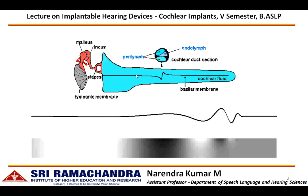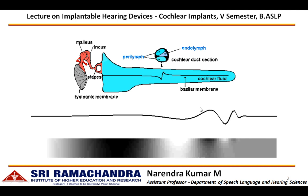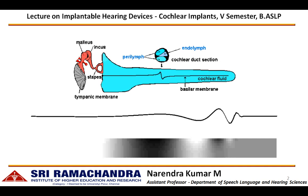Also, the amplitude of the travelling wave depends upon the amplitude of the incoming signal. This is how the cochlea processes the amplitude of the signal as well as the frequency content of the signal.